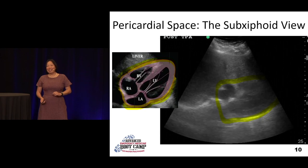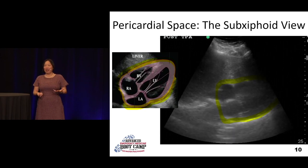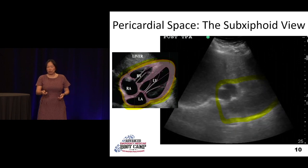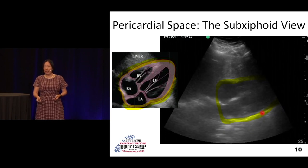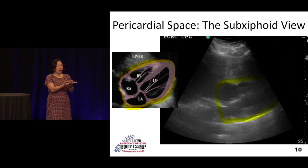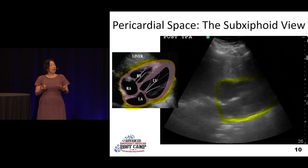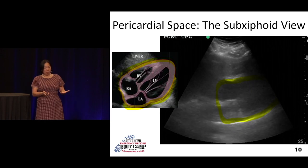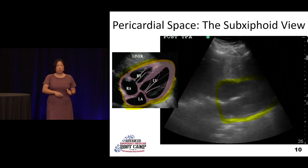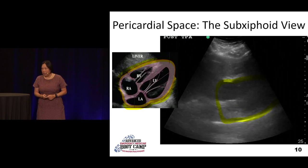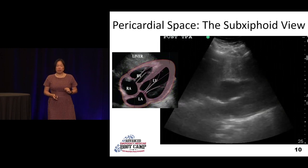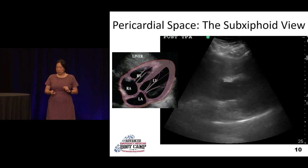This is the heart. We're going to go through it just so you know you can see it's beating, and your pericardium is the covering of the entire heart — it's highlighted in yellow here. That's where we'd be looking for a stripe of black space if there's a pericardial effusion.